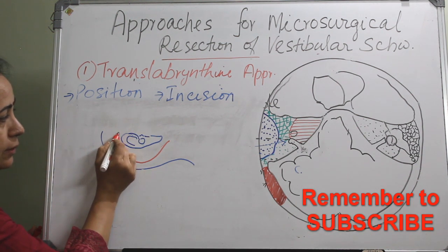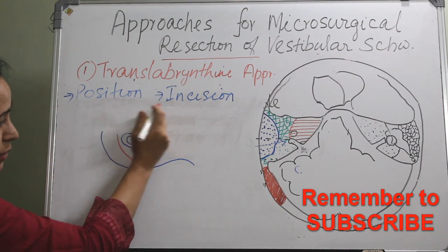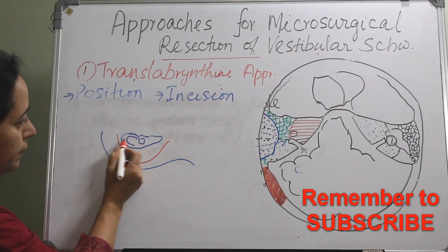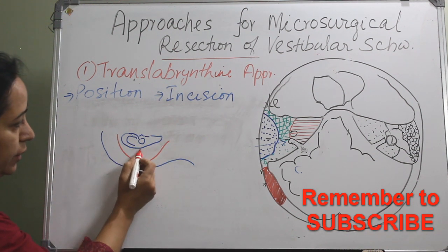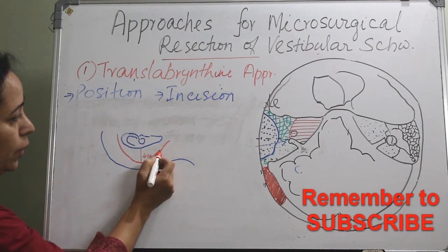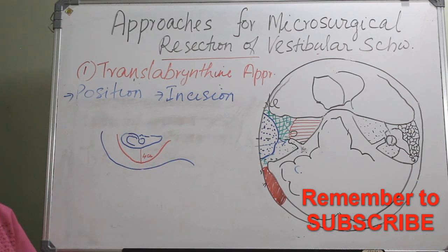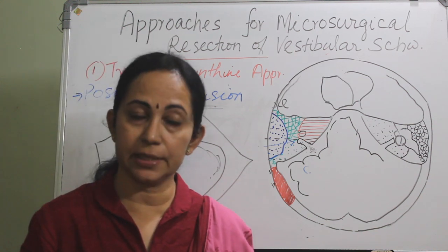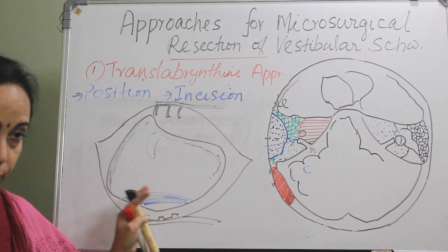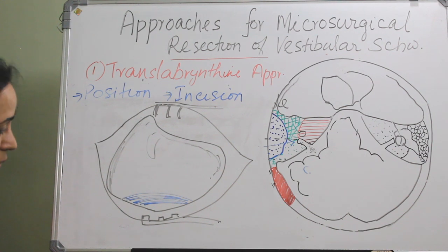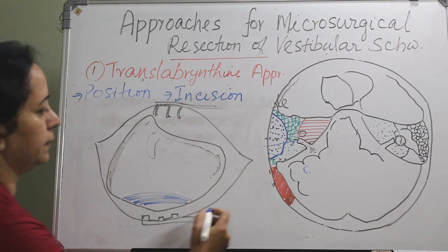The incision runs anteriorly from the level of the anterior border of the external auditory canal, then curves posteriorly 4 cm behind the post-aural crease, going down to the tip of the mastoid. After the incision, it is deepened, then the periosteum is elevated, similar to mastoid exploration, followed by a complete mastoidectomy.